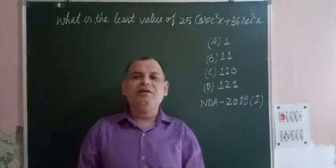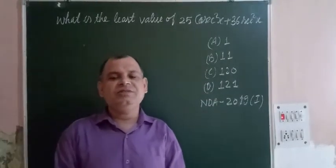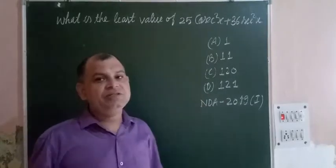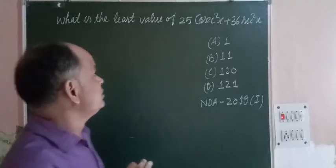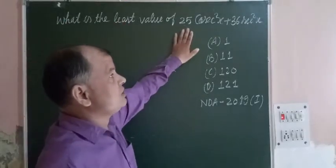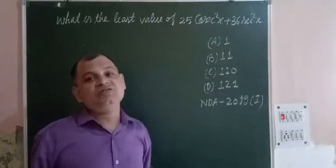Hello sir and welcome to NDA math solution series. Here is a question from NDA 2019 based on trigonometry. The question is: what is the least value of 25 cosec²x + 36 sec²x?